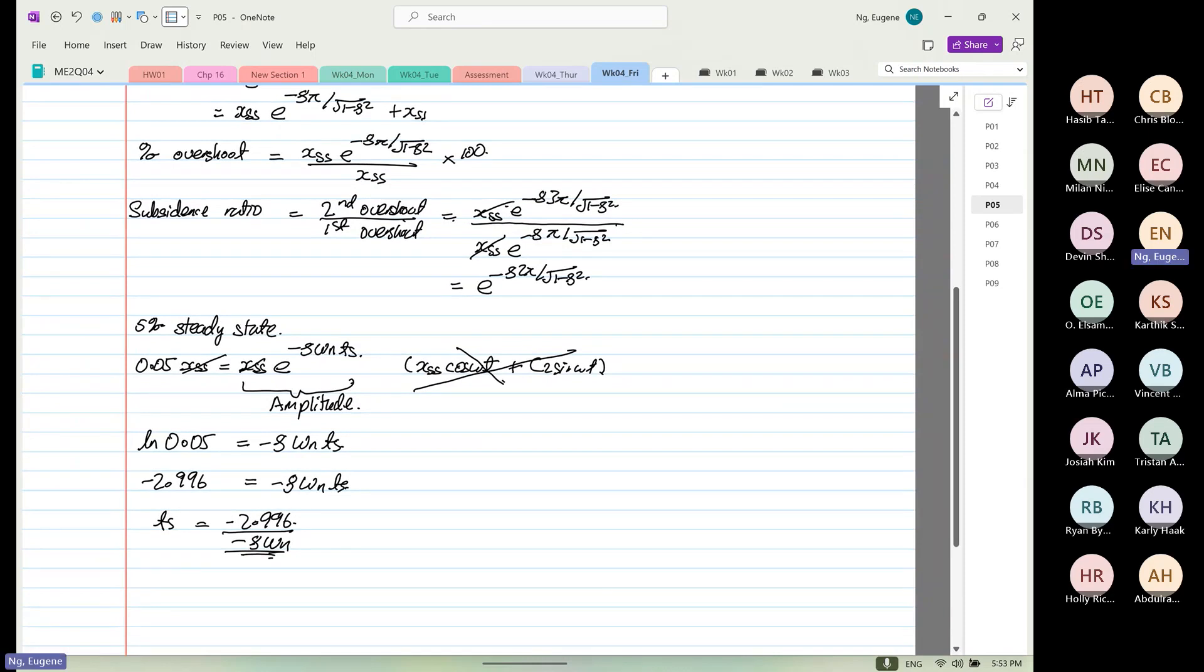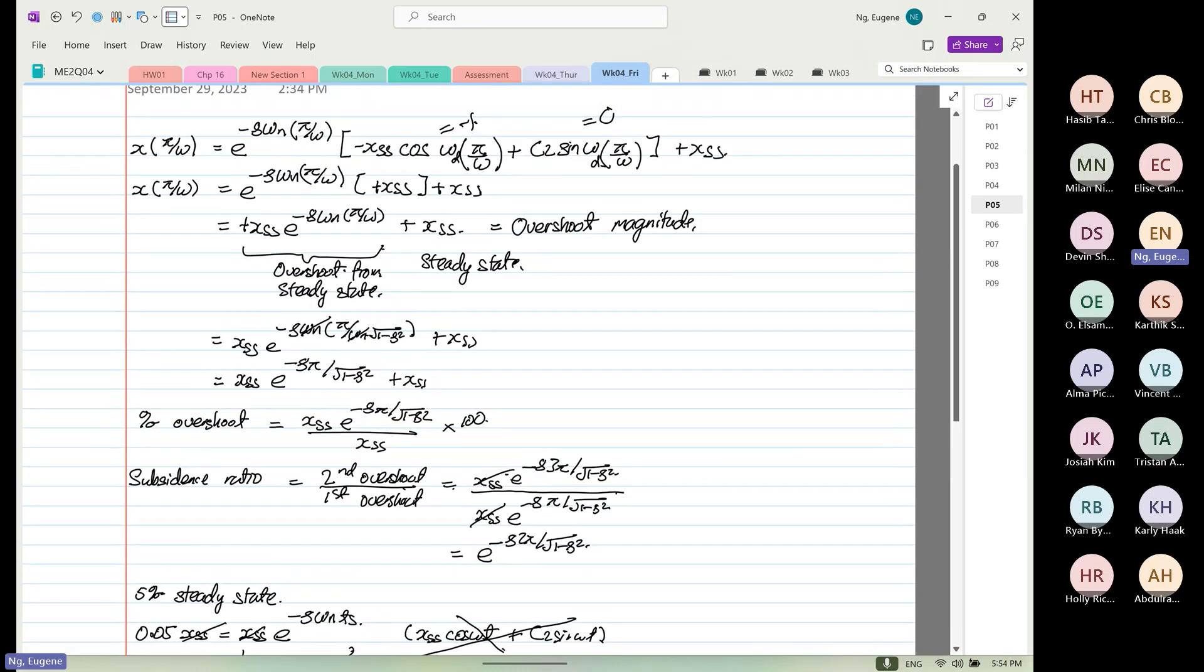So, does that answer your question? How to answer a question like this? But listen, if you can remember the formula, go for it. You don't need to derive, you just write percentage overshoot. If you can remember, cancel this, you can remember this formula, go for it. I can't.